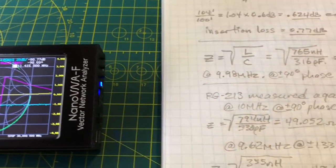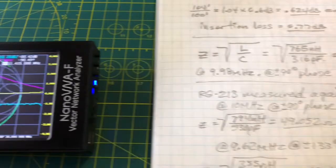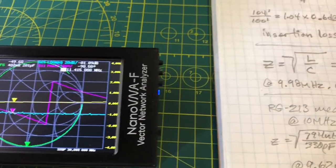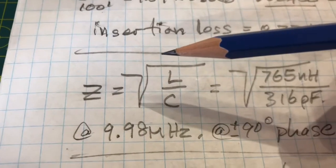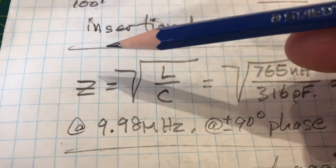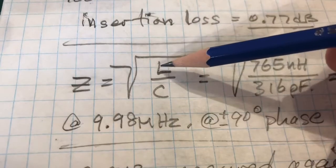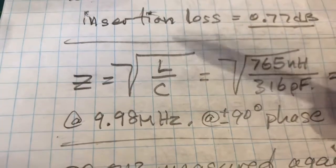Hello everybody, this is Victor Echo 6 Whiskey Golf Mike here with you. In my last video I showed everybody a formula that can be used to calculate the characteristic impedance of a coax cable where the impedance equals the square root of the measured inductance over the measured capacitance.